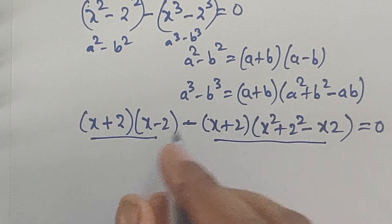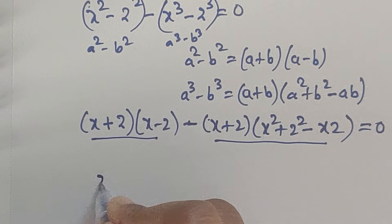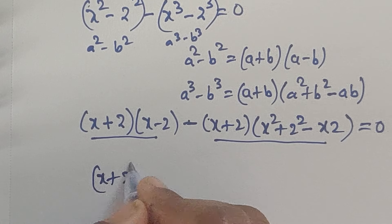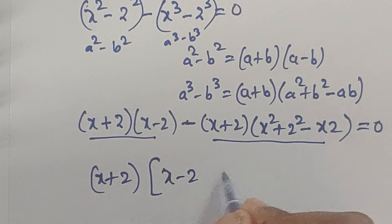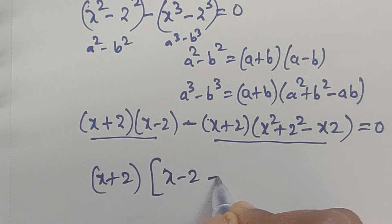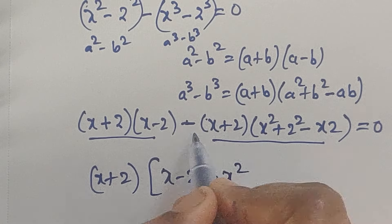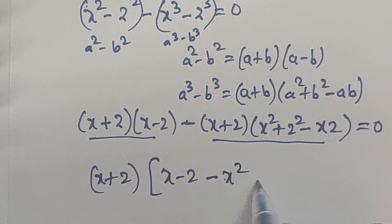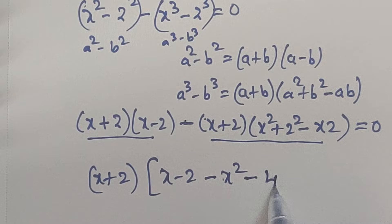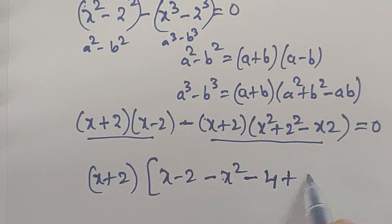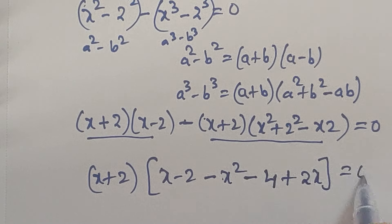In these two terms we have a common factor, that is (x plus 2). So we can take out (x plus 2) as common. So we will get here (x minus 2), minus x squared, and minus minus 2 squared is 4, so minus minus gives plus 2x, equals 0.